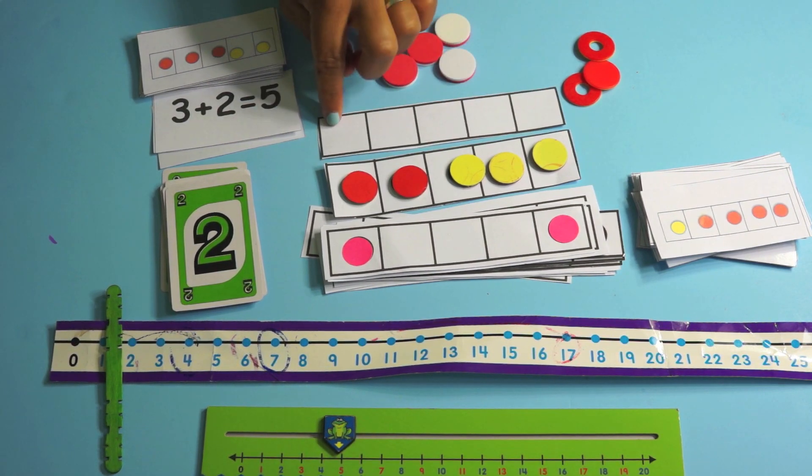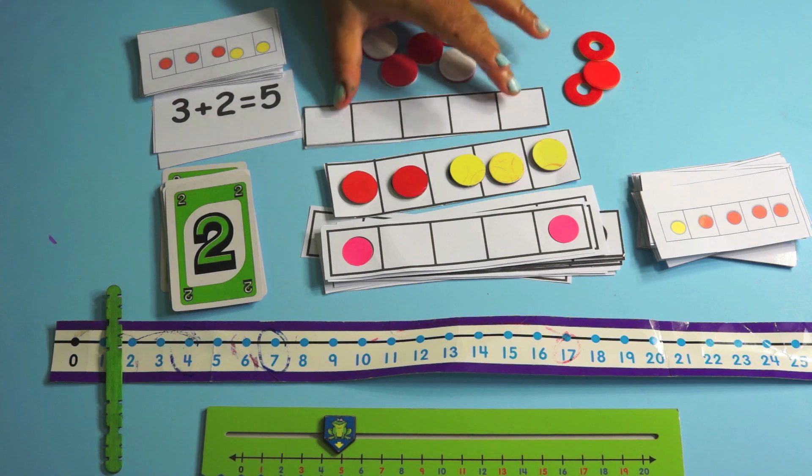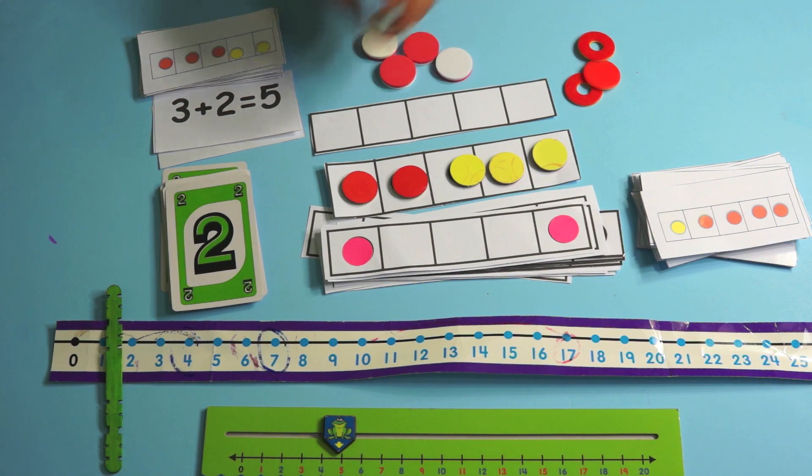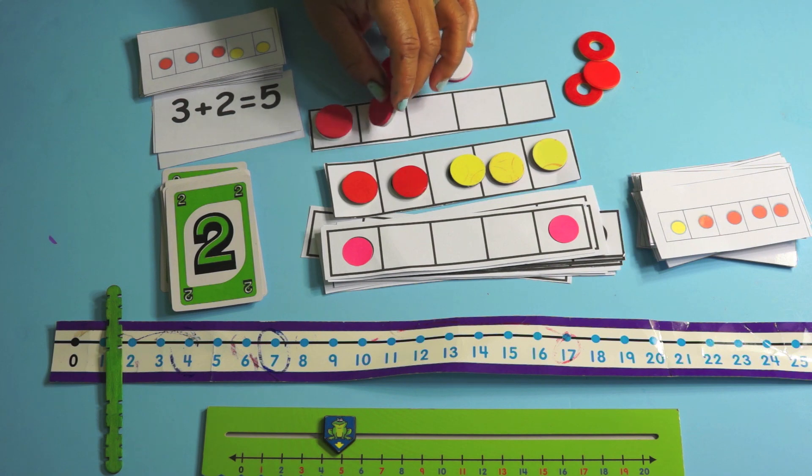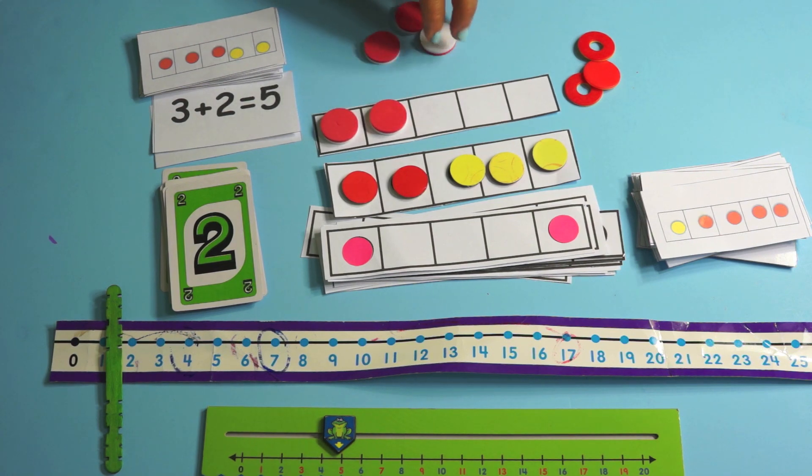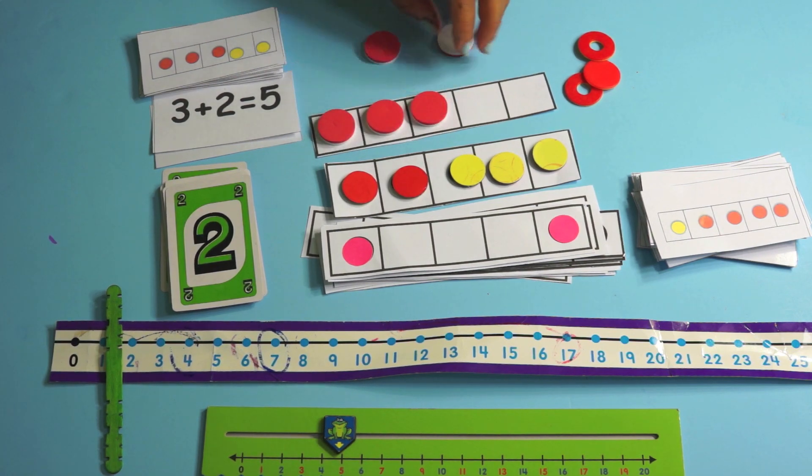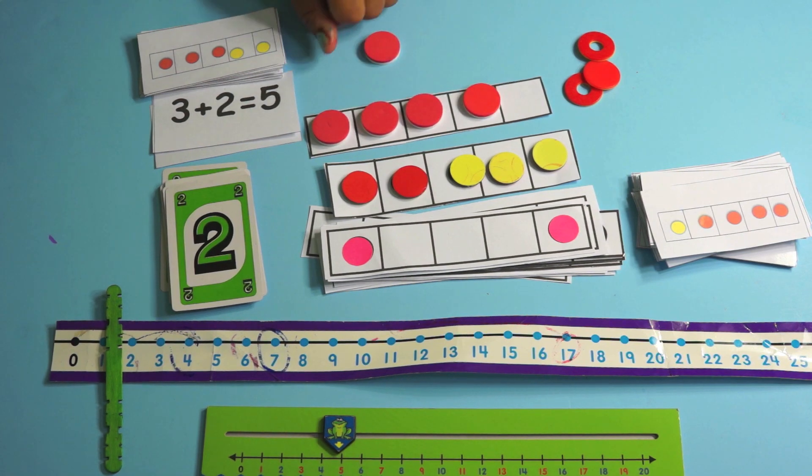So here's a five frame. It has one, two, three, four, five frames. And what you're going to do is you just tell kids stories or you say there's two pieces of candy on the counter and then Maria put two more. How many does she have on the counter now?